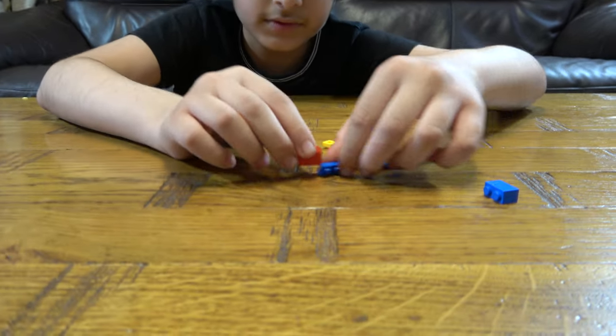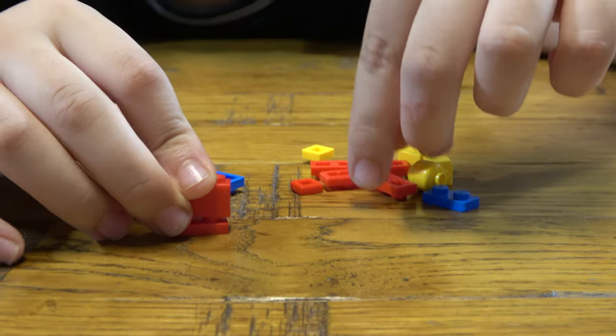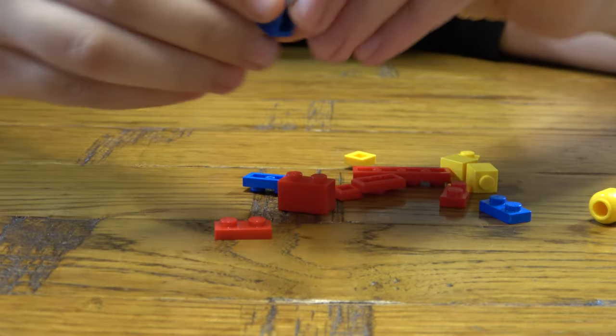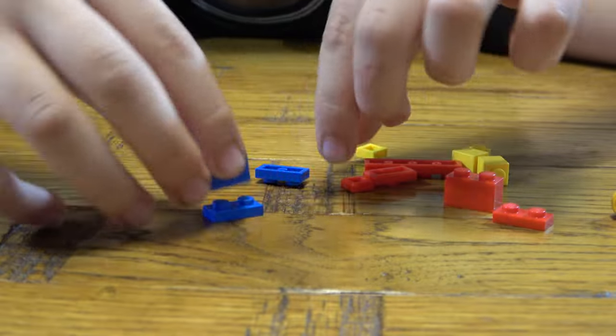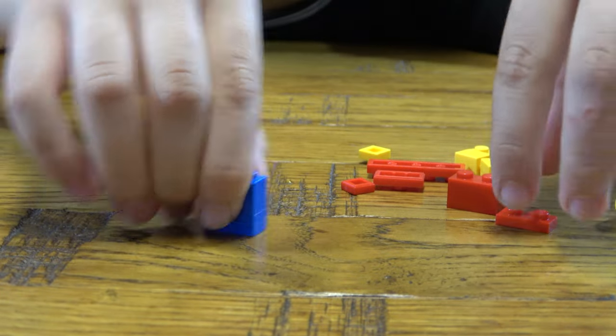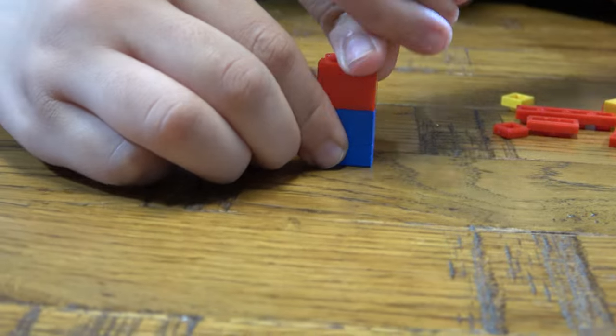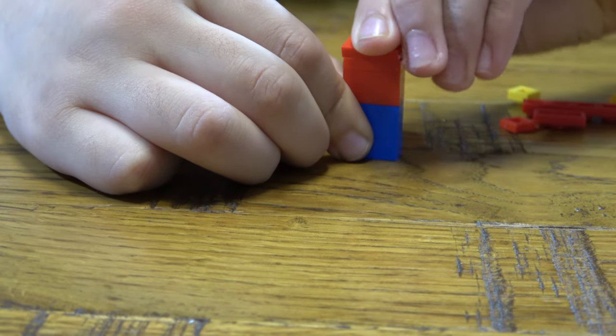The first thing we need to do is get this piece. We place this here, another one there. Place this here, two of these on top like so.